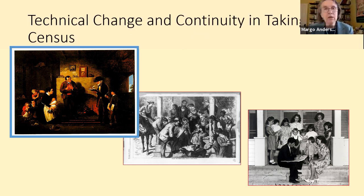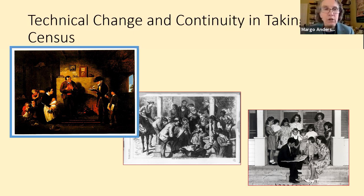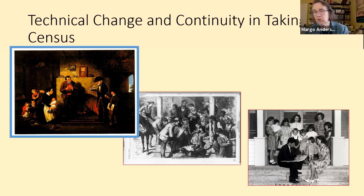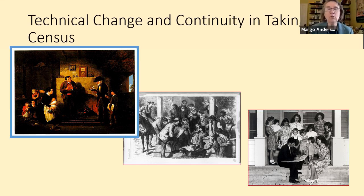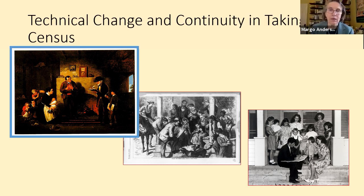Now let's talk about technical continuity and change in taking the census. There are historical images of census-taking in 1850, 1870, and 1930 — notably, nobody is social distancing. This was a very intimate, close process of human family interaction, and that's going to be important as we talk about how we handle this pandemic.